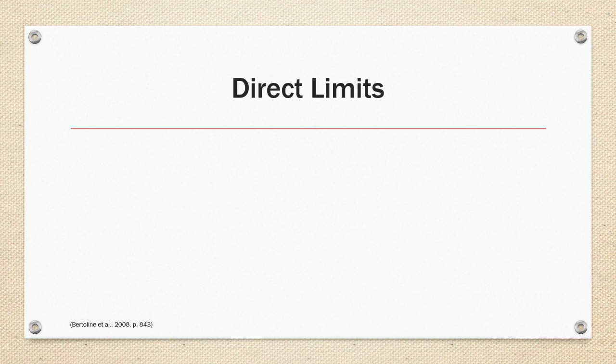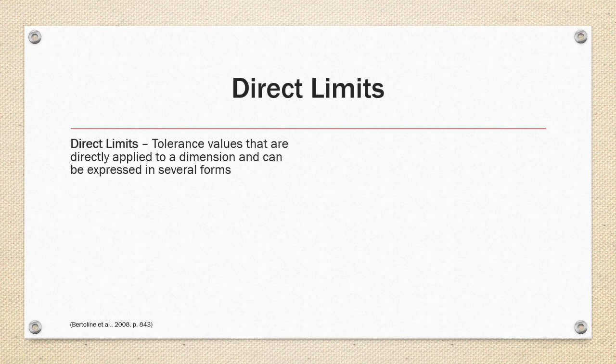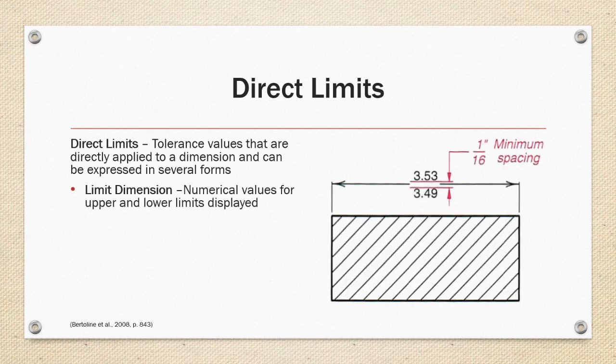Direct limits are the tolerance values that are directly applied to a dimension and can be expressed in several forms such as limit dimensions, where the numeric value for upper and lower limits are displayed. There must be a 1.5 millimeter or 1 16th of an inch space between the upper and lower limit values as shown in the image on the right.